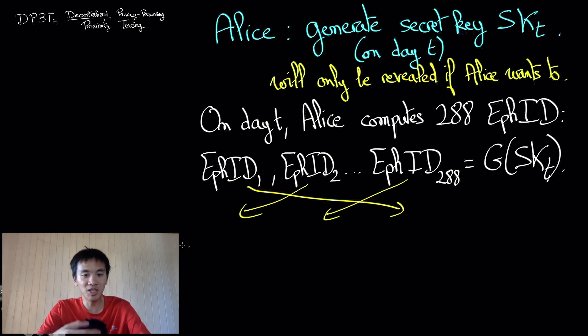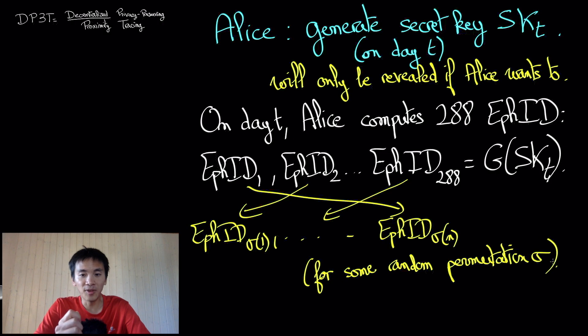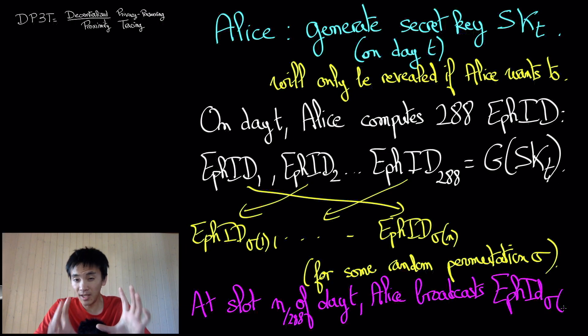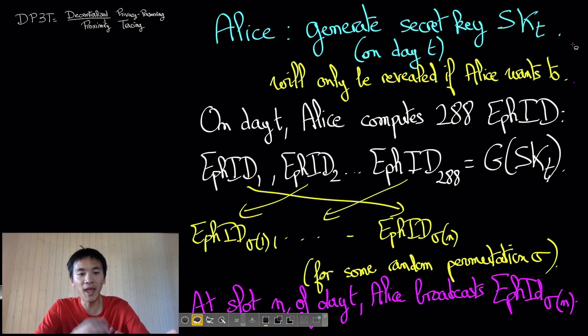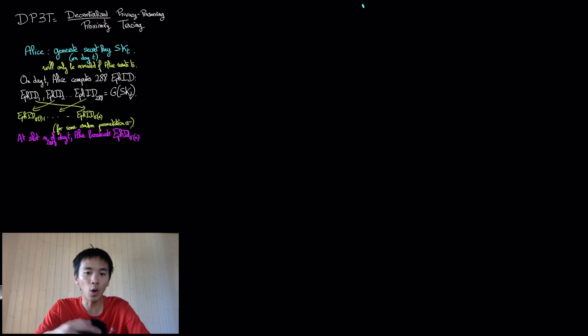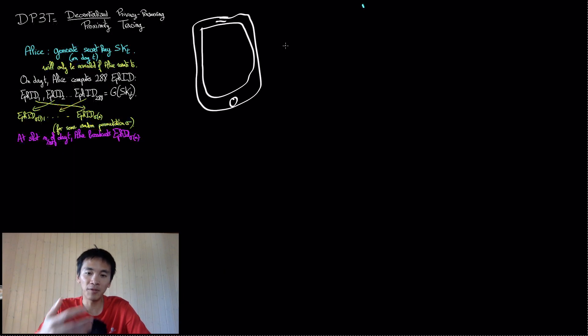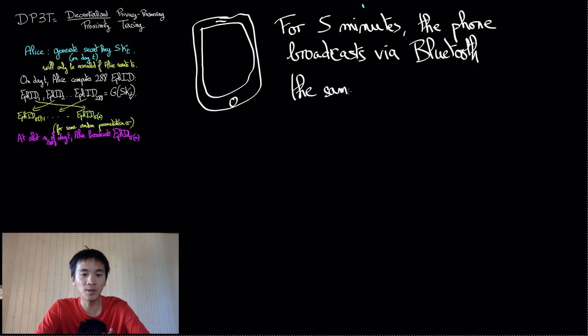Then, Alice will randomly shuffle the 288 ephemeral identifiers on date T and put them in a random order. Every 5 minutes, she will pick the next ephemeral identifier of the list and will be broadcasting it via Bluetooth. Thus, any listening Bluetooth device will be hearing Alice's phone repeating over and over the same ephemeral identifier for 5 minutes. And then, after 5 minutes, another ephemeral identifier will be chosen and broadcast.